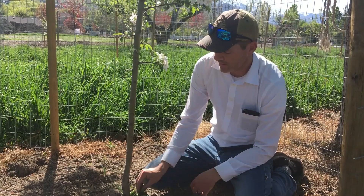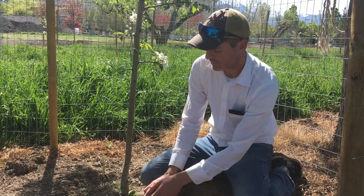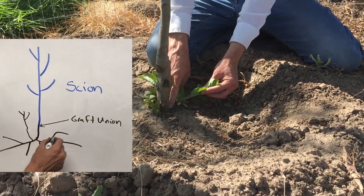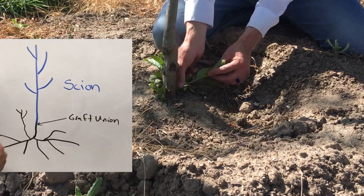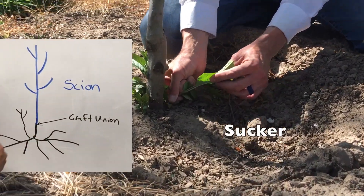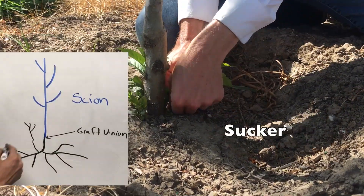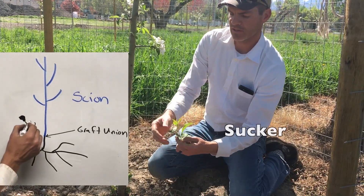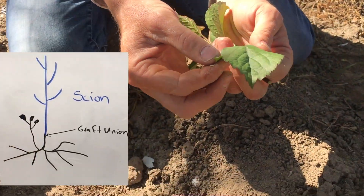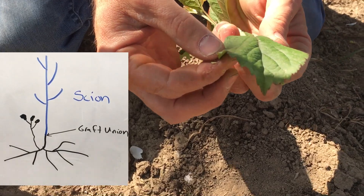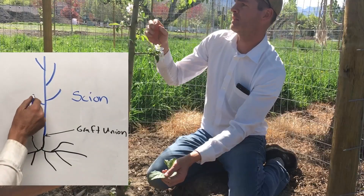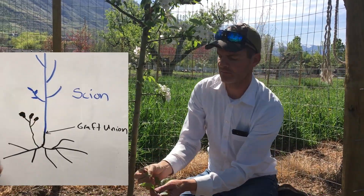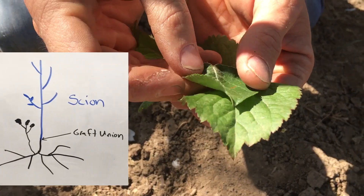What we get here is growth below the graft union. I'm just going to pull this out — this is called a sucker. And you can see, if we look at this leaf here, it's different than the leaves on the scion.